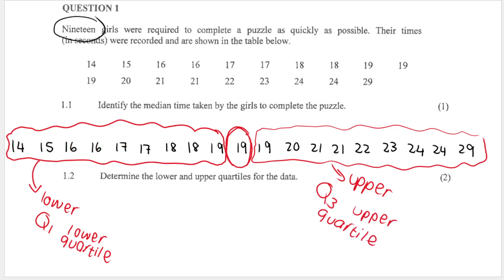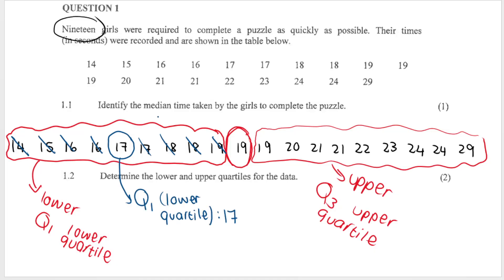To find the lower quartile, we do the same cross-out method as we did for the median, but we're only working with the lower part of the data set. Crossing off two at a time from each end, just be careful when you get to the end — 17 is in the middle. This is my lower quartile, Q1 = 17.